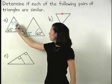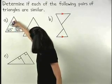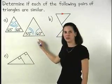Now we have two pairs of congruent angles, the 55-degree angles and the 60-degree angles.